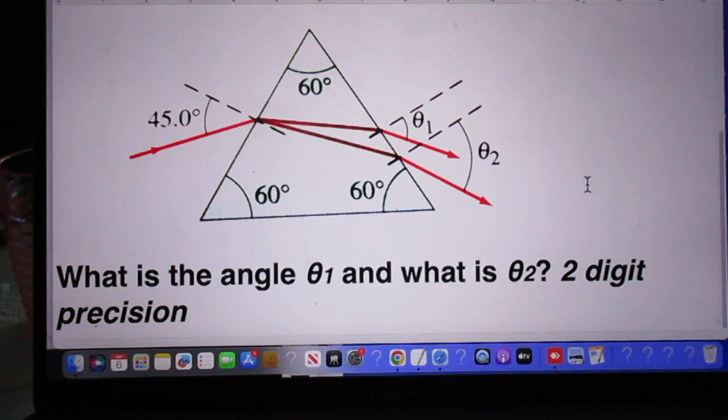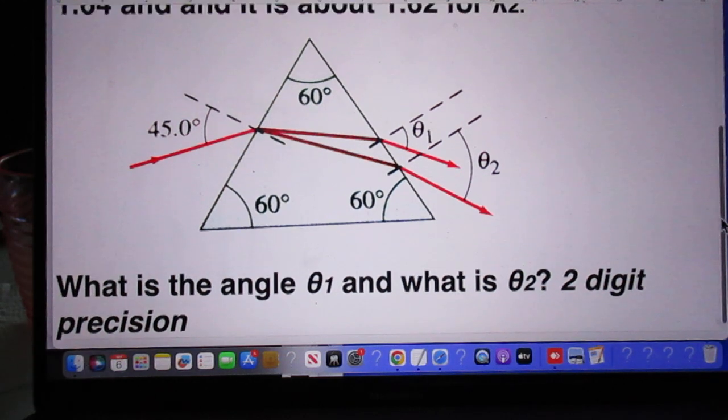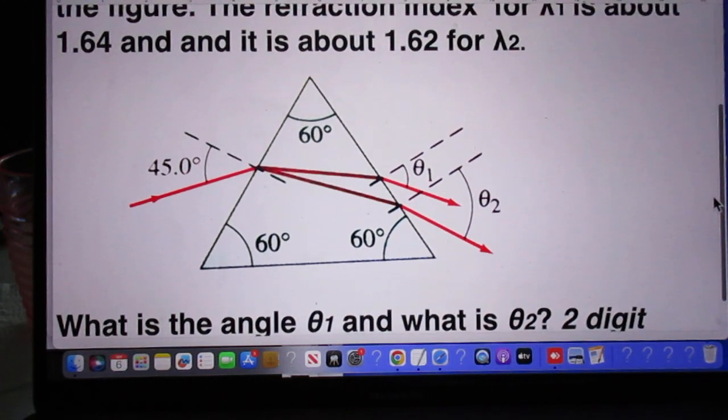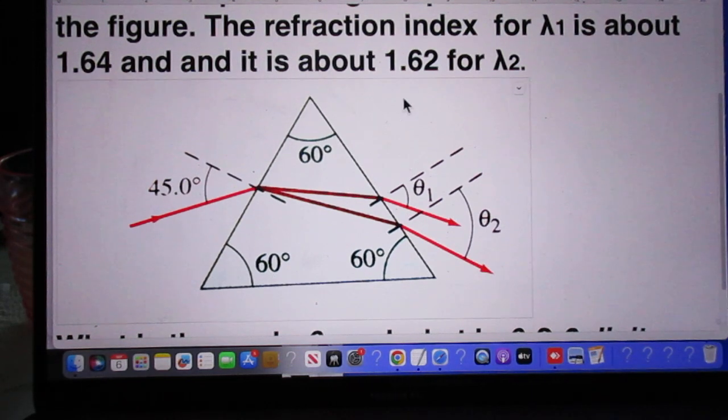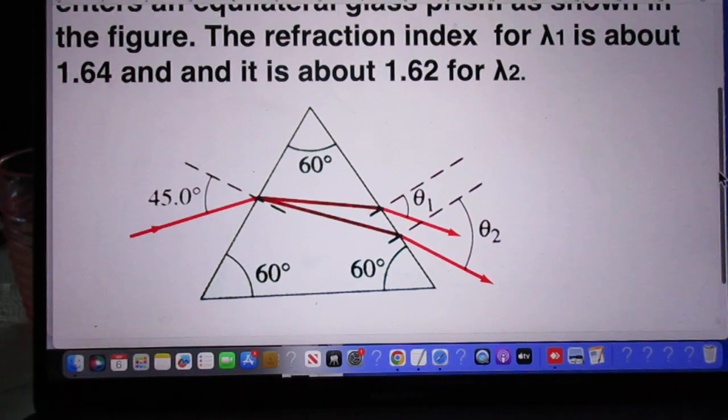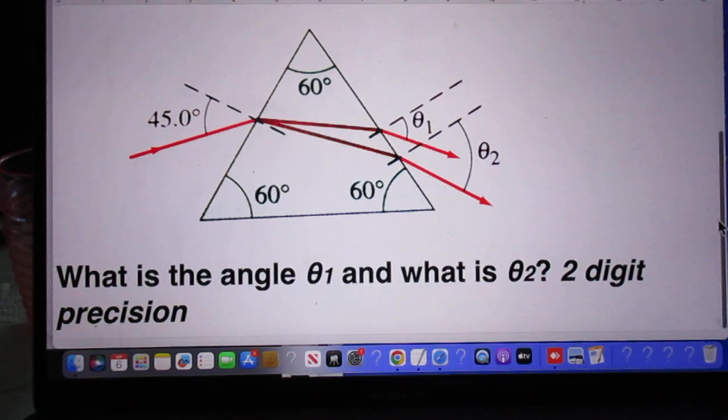And the question is how large is theta 1 and how large is theta 2? I'll be happy with 2-digit precision. A much higher precision may not be too useful because I mentioned here that the index of refraction is about 1.64 and the other one is about 1.62. But if you want to use these numbers exactly and you get 3-digit precision, that's fine with me too.